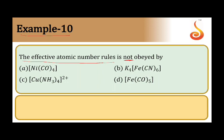If they can achieve the atomic number of the nearest noble gas, then we call those compounds as obeying the EAN rule.